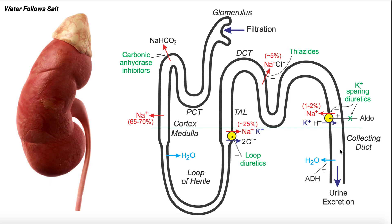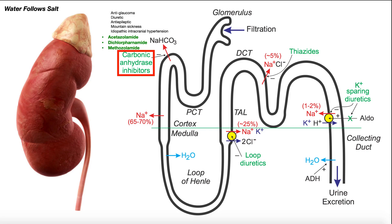Anything that remains in the collecting ducts past this point will end up in the urine and be excreted. Now, there are four major classes of diuretic drugs — you can see these written in green at various spots here — and each one of these diuretics is going to act on a different protein situated in a different region of the nephron.